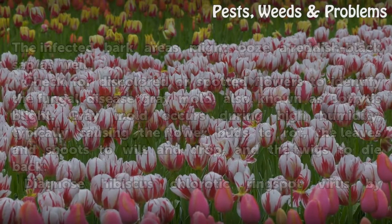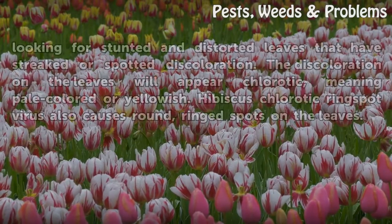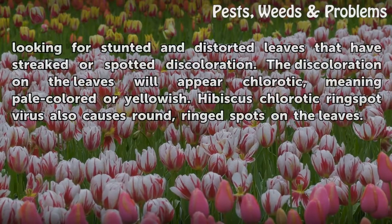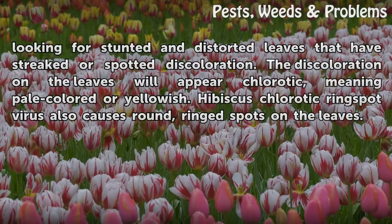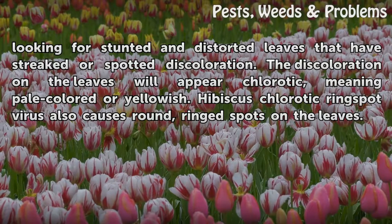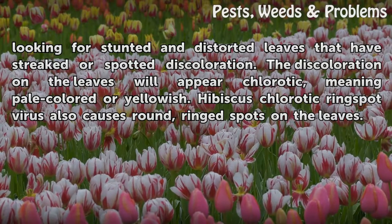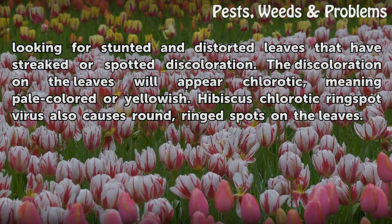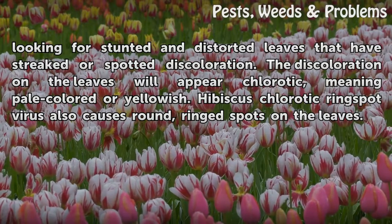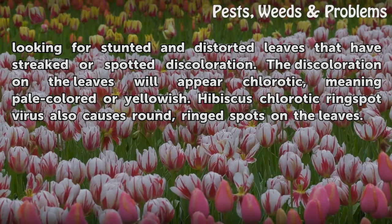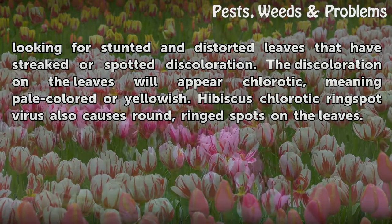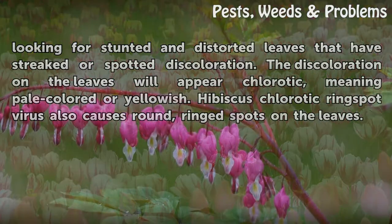Diagnose hibiscus chlorotic ringspot virus by looking for stunted and distorted leaves that have streaked or spotted discoloration. The discoloration on the leaves will appear chlorotic, meaning pale-colored or yellowish. Hibiscus chlorotic ringspot virus also causes round, ringed spots on the leaves.